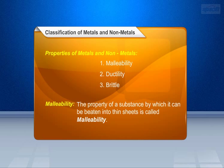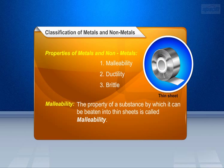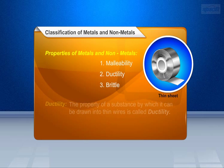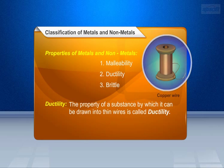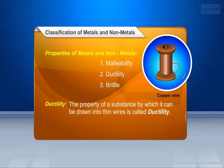What is meant by malleability? The property of a substance by which it can be beaten into thin sheets is called malleability. What is meant by ductility? The property of a substance by which it can be drawn into thin wires is called ductility.